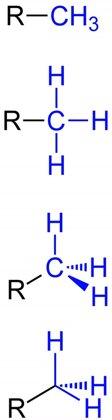For example, protonation of methanol gives a strongly electrophilic methylating reagent: CH3OH + H+ → CH3+ + H2O. Similarly, methyl iodide and methyl triflate are viewed as the equivalent of the methyl cation because they readily undergo SN2 reactions by weak nucleophiles.